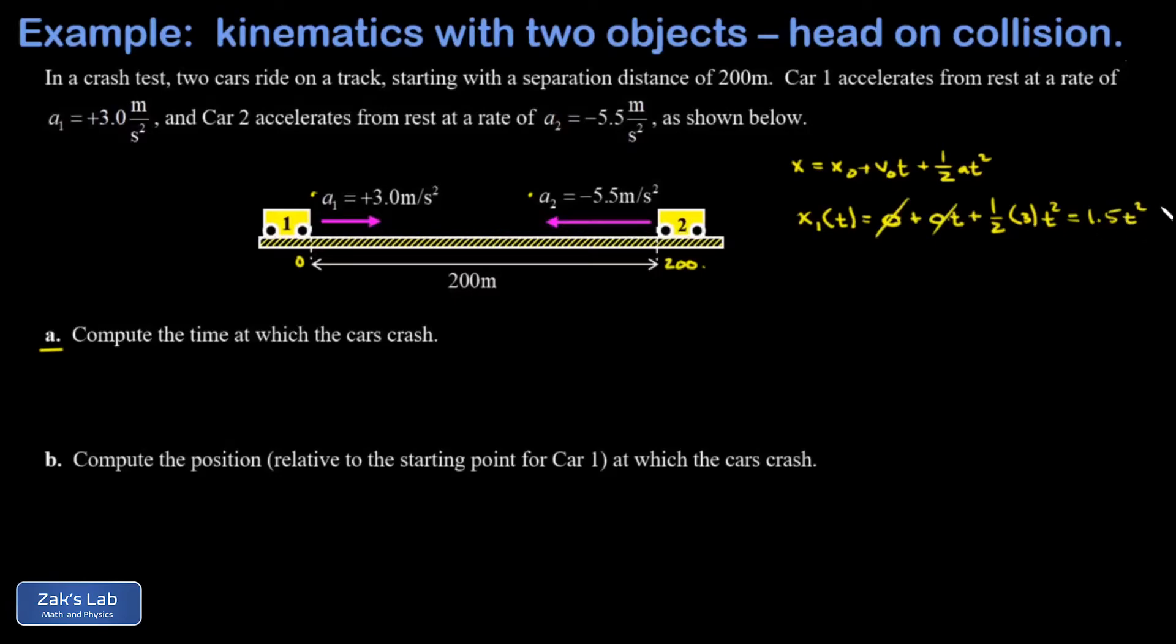We do the same thing for car number two, but the initial position of car two is 200, the initial velocity is zero because it started from rest. And then my acceleration has a minus sign in it, so I'm going to pull that out in front. I get negative one half times 5.5 times t squared, and this gives me 200 minus half of 5.5, which is 2.75 times t squared.